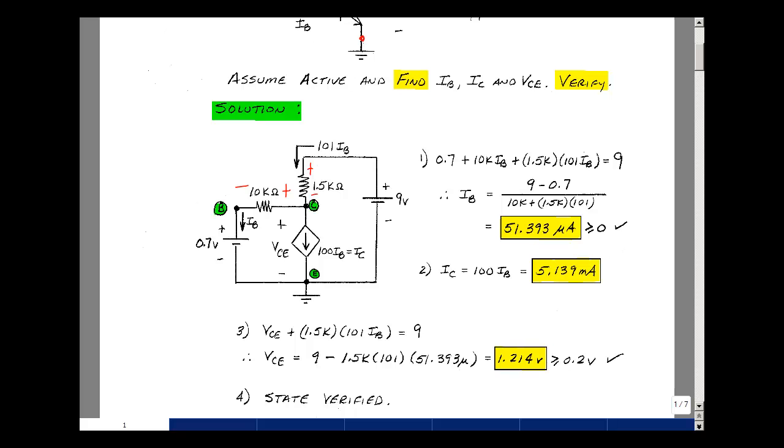And lastly, you've got to find the collector emitter voltage. If you go around this loop here, we know everything but the collector emitter voltage. We know the current in this resistor and the resistance. We know the voltage. So let's do that.